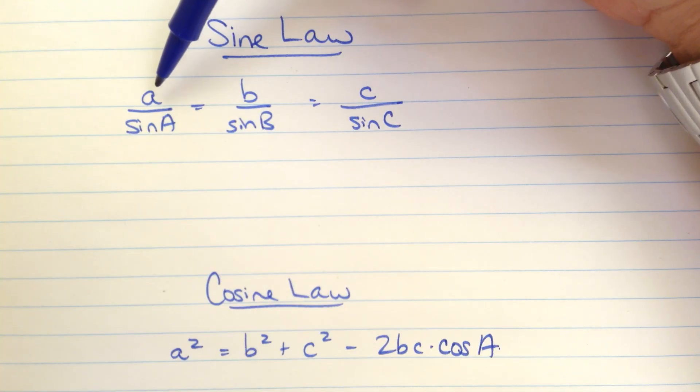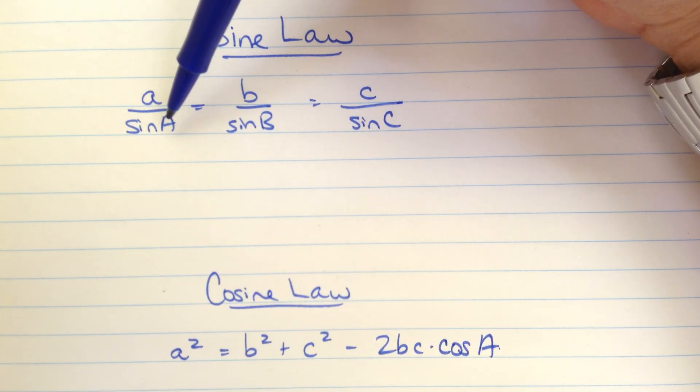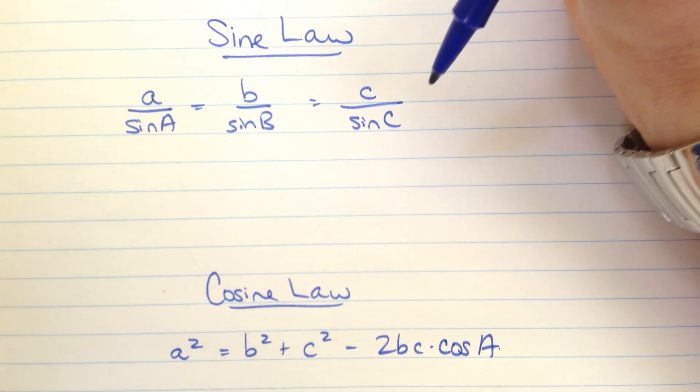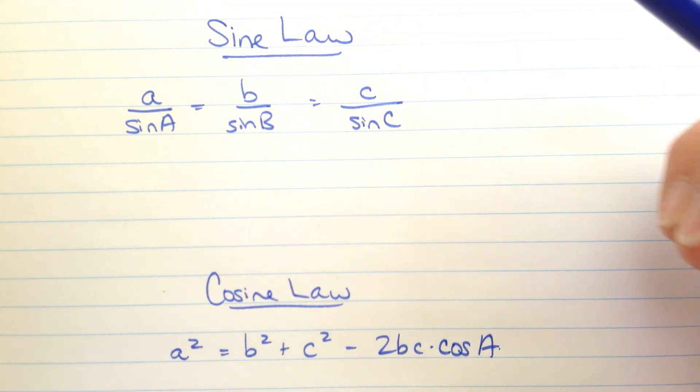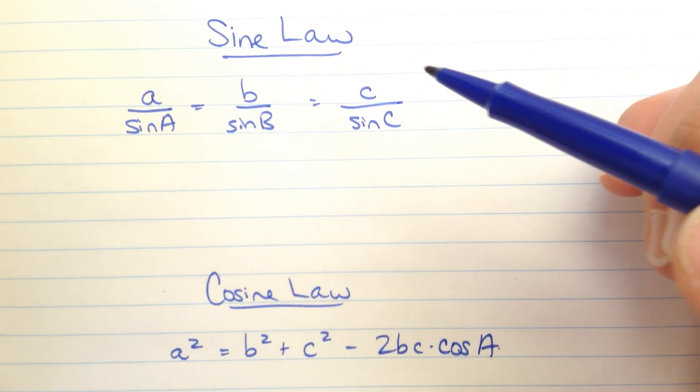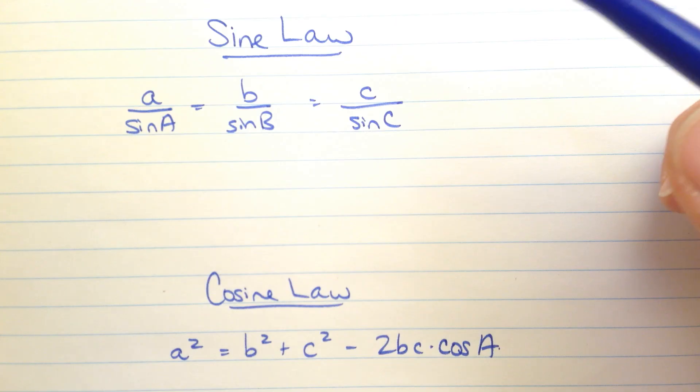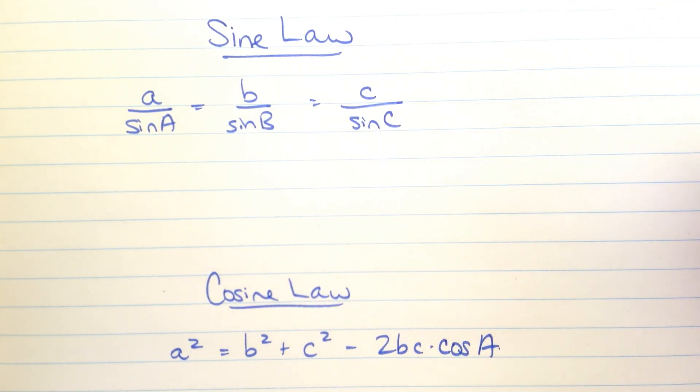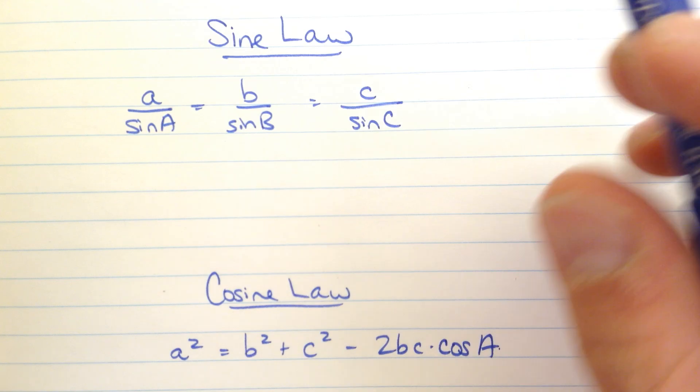Here's the sine law written with the length divided by the sine of the opposite angle. A over sine A is equal to B over sine B which is equal to C over sine C. And you can flip this over the reciprocal of this. Sine A over A equals sine B over B equals sine C over C. And so to use this you've got to know three out of four pieces of information from two of these ratios.